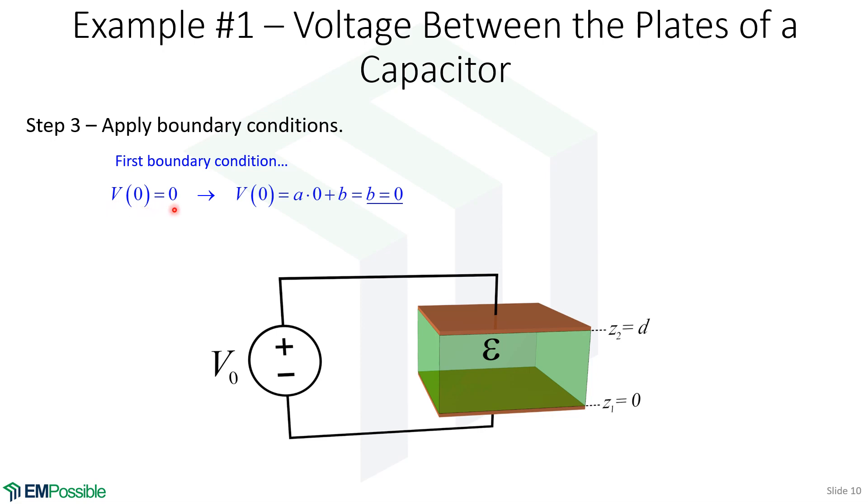So the electric potential on the bottom plate is zero. So our equation was AZ plus B, but now Z equals zero. So the A times zero just goes to zero. And we're left with B equals zero. So the B constant drops out of the solution.